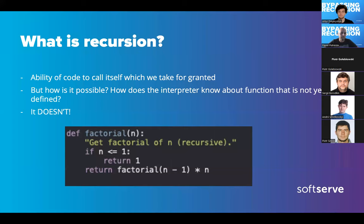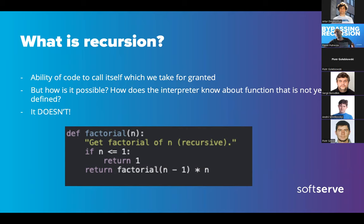What is recursion, that we basically take for granted? This ability in modern languages is the ability for some part of the code to call itself in a recursive way. It calls itself and gets some result from a task of a bit smaller complexity. We work out our result from the very bottom by adding it up.